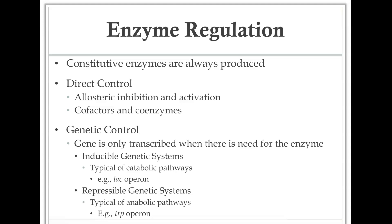There are two approaches to genetic control. An inducible system is typically off and gets turned on when needed — typical of catabolic pathways. If a bacterium isn't used to catabolizing a certain nutrient, the genes for those enzymes are turned off, but the bacterium can induce their expression when those nutrients are present.